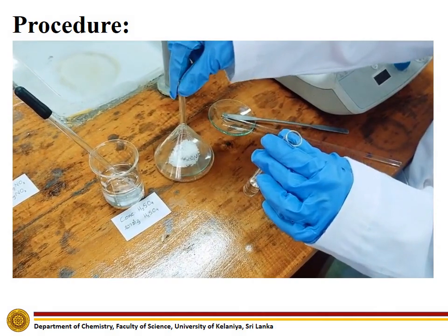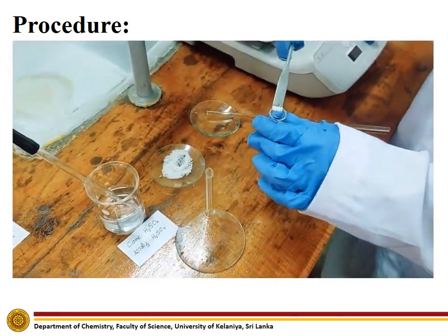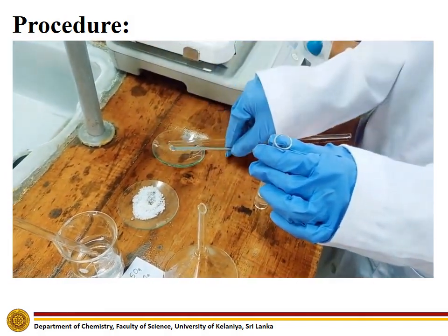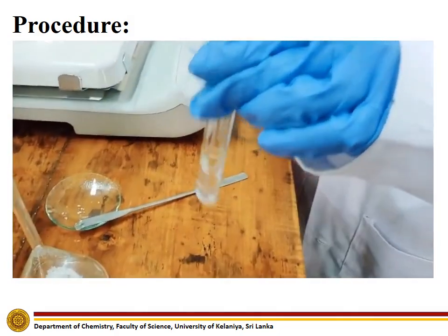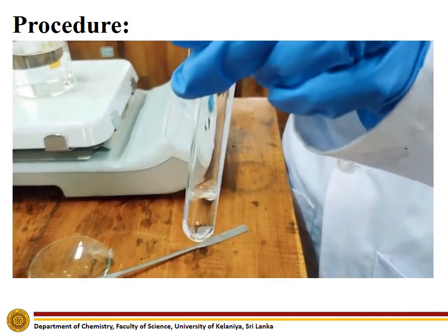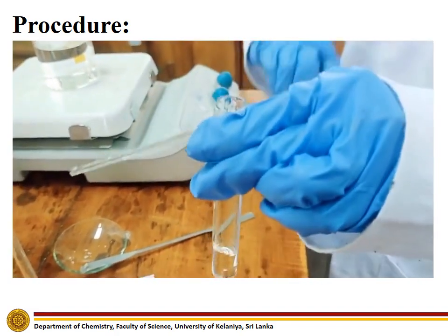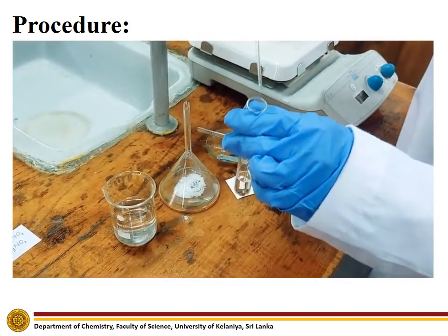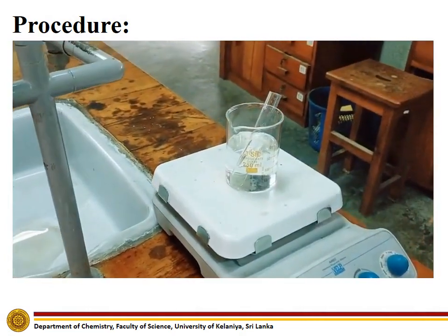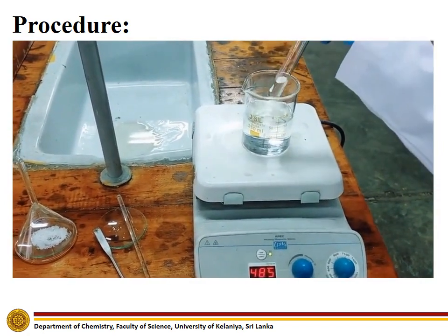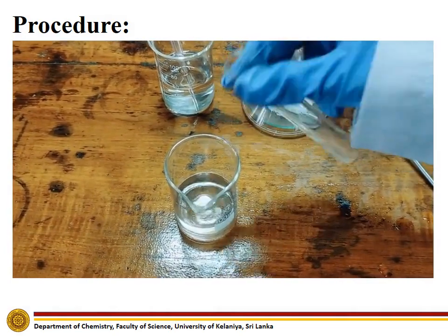To carry out the fourth experiment, first add benzoic acid to a test tube containing ethanol and dissolve the solid in ethanol completely. After the solid is dissolved, add a few drops of concentrated sulfuric acid and heat the mixture gently for about one minute. Take out the mixture and pour it into an aqueous solution of sodium bicarbonate in a beaker and note down the odor.